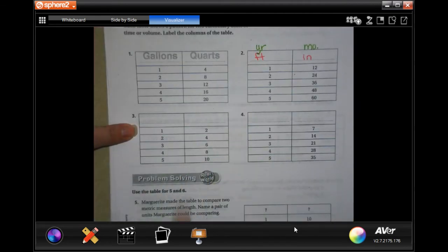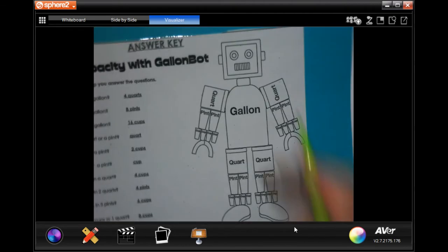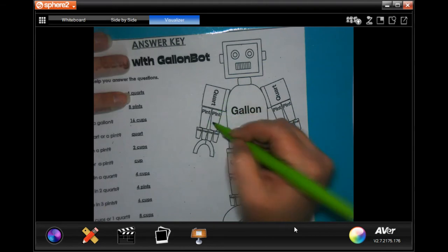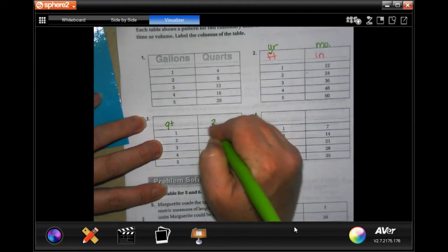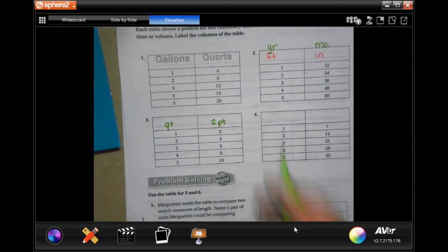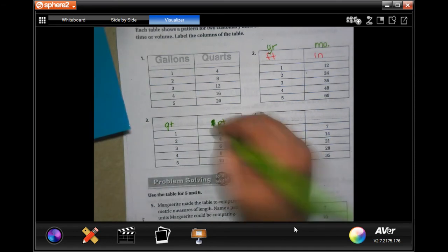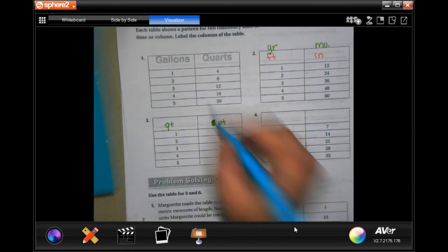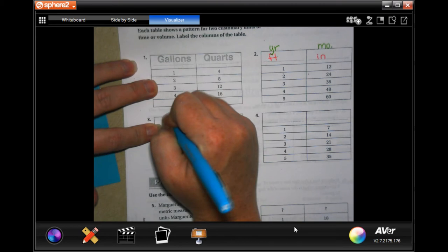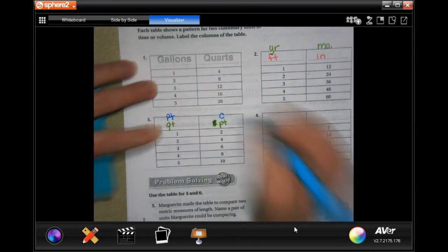Same thing here, 1 to 2. We could use our chart and say one quart is two pints. We could say one pint is two cups.